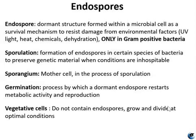Sporangium is the name given to the mother cell, which is the cell that is in the process of forming a spore. Germination is the name of the process in which endospores restart their metabolic activity and the cells become vegetative. Vegetative cells are those that are growing, dividing, and reproducing.